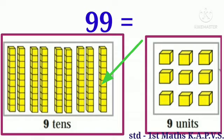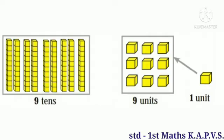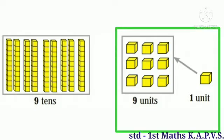Now, we have to add 1 unit in 99. There are already 9 tens and 9 units. We add 1 unit in it. 9 units plus 1 unit is equal to 10 units.